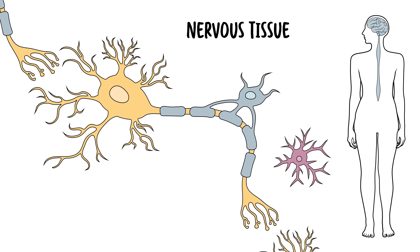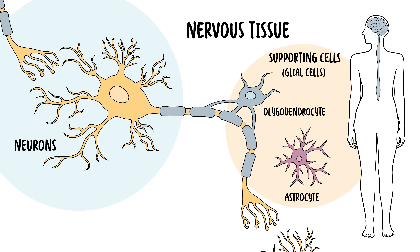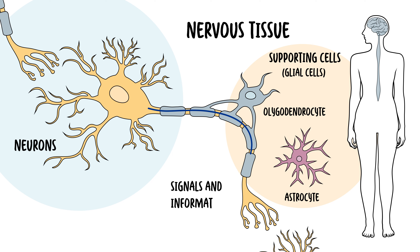Nervous tissue is a second type of tissue, which consists of neurons and supporting cells called glial cells in high numbers. Nerve cells really transmit signals and information to other cells. They serve as communicators, essentially, throughout our body.